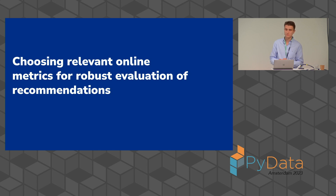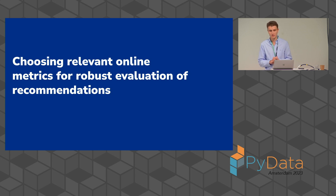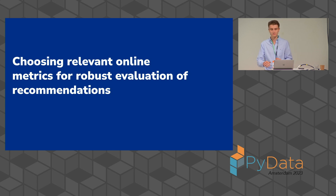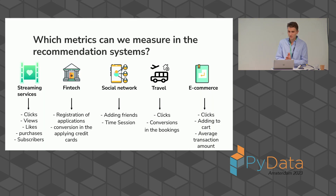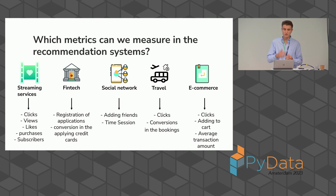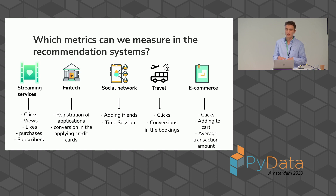Imagine we build a complex recommendation system pipeline. We choose an offline metric and measure beyond-accuracy metrics like diversity or novelty. But still, how do we choose relevant online metrics to evaluate our business effect? This depends on business area. For example, in FinTech the main metric was registration or conversion for applying credit cards. Even within travel like Booking.com, we have different types of metrics for flights and for accommodations.